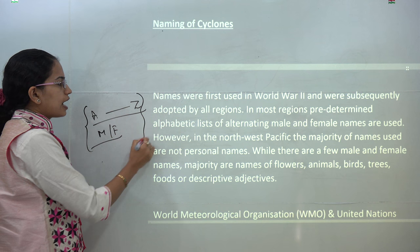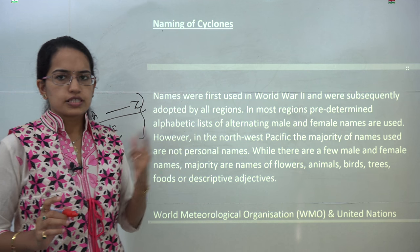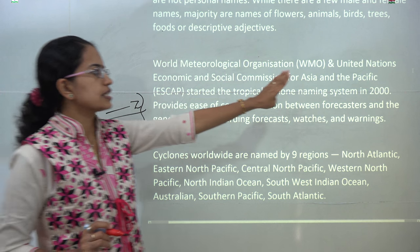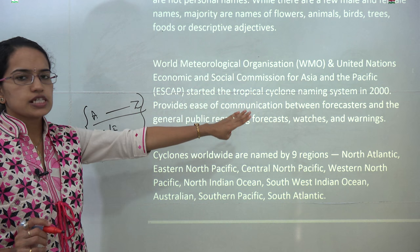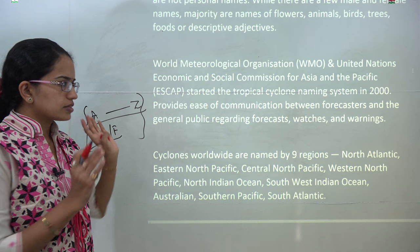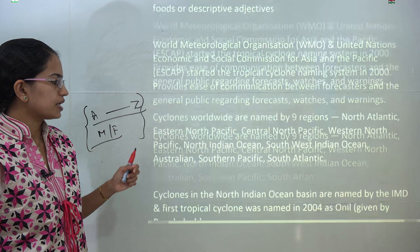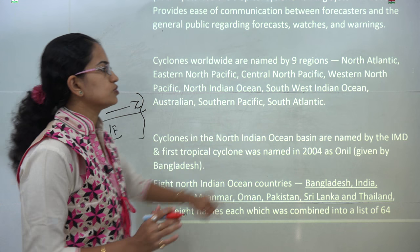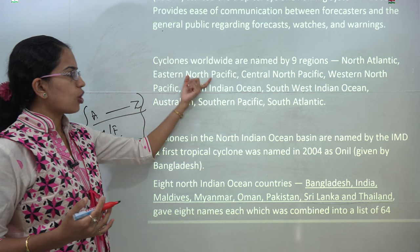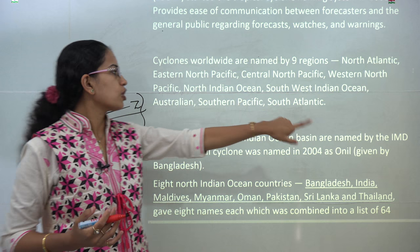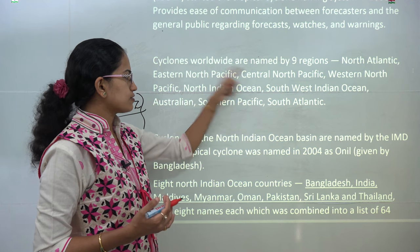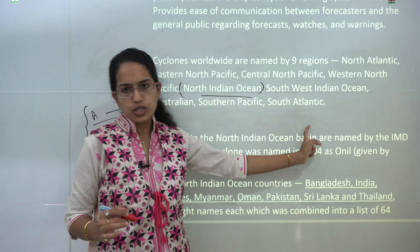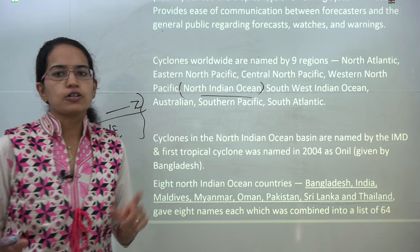In 2000, the World Meteorological Organization and the United Nations Economic and Social Commission for Asia and Pacific introduced a cyclone naming system for tropical areas, specifically the Indian region. Cyclones worldwide were divided into nine distinct zones: the Atlantic, North Atlantic, North East Pacific, Central North Pacific, West North Pacific, North Indian Ocean, South West Indian Ocean, Australian, South Pacific, and South Atlantic.